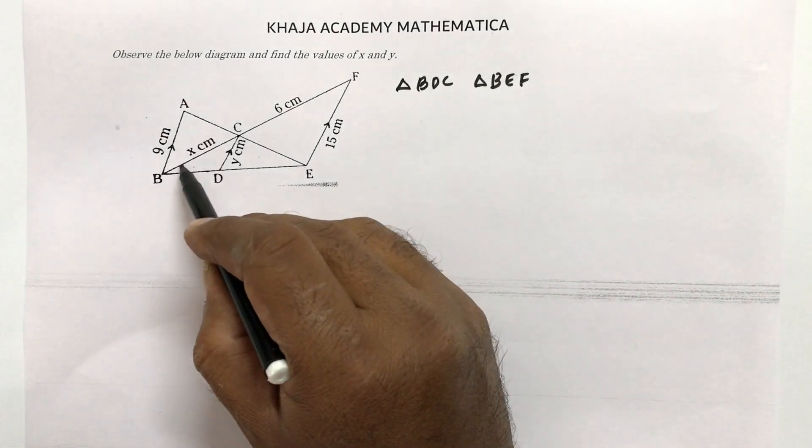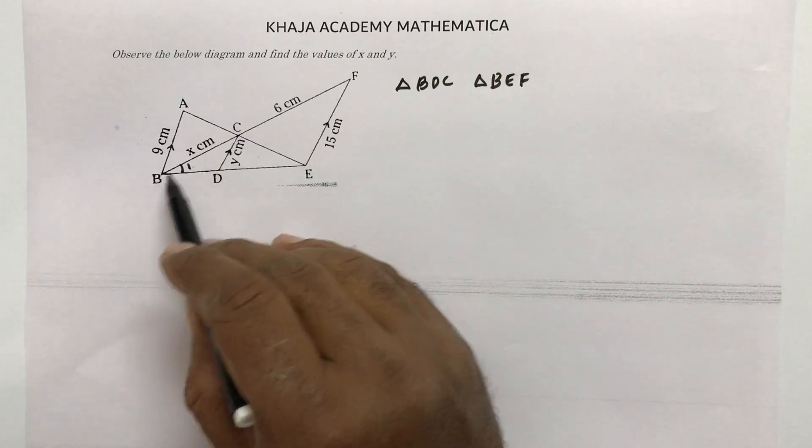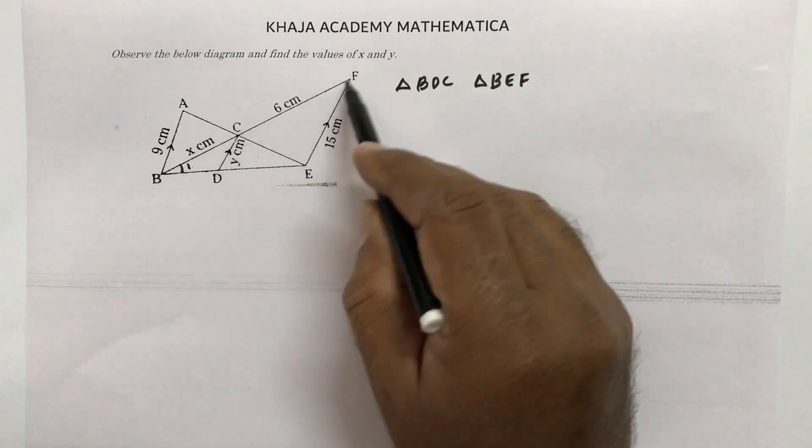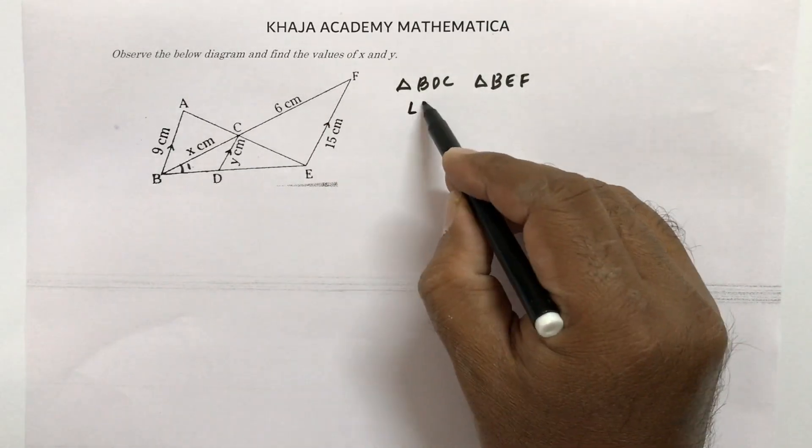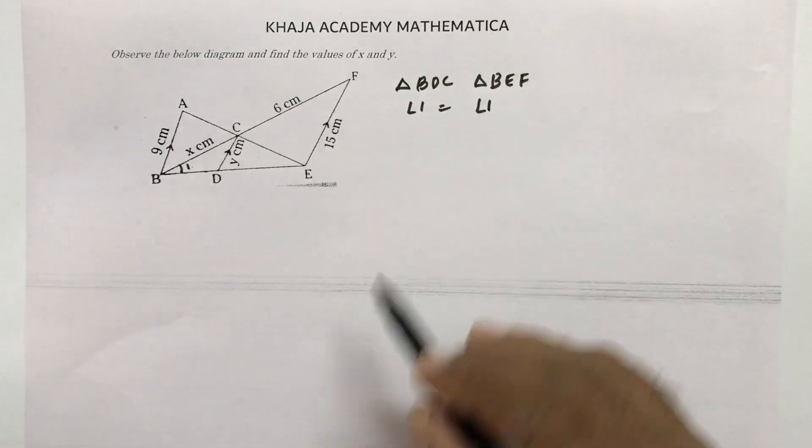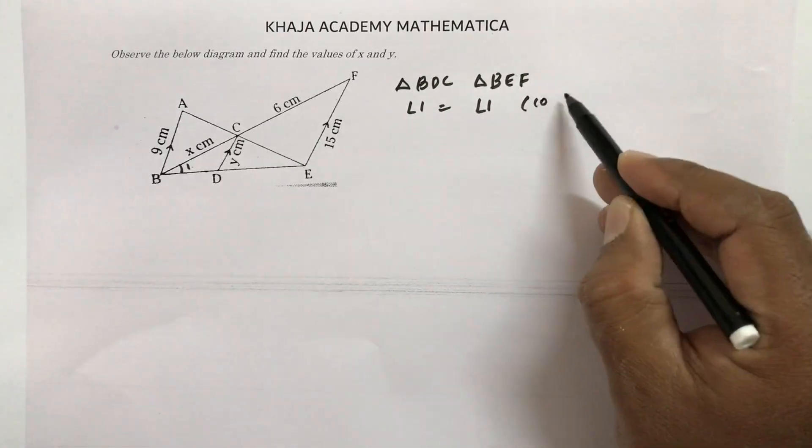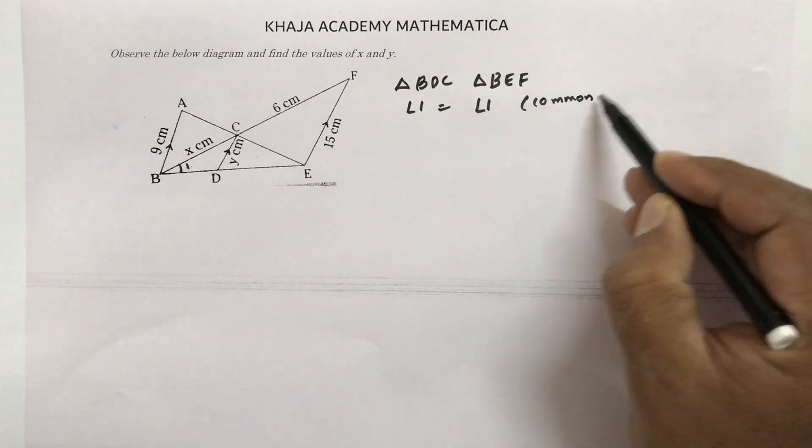See in these two triangles, this angle 1, which is nothing but DBC equals EBF. So angle 1 equals angle 1 and the reason is common angle.